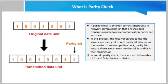In an even parity check, parity bits ensure there are an even number of ones and zeros in the transmission. In an odd parity check, there are an odd number of ones and zeros in the transmission.